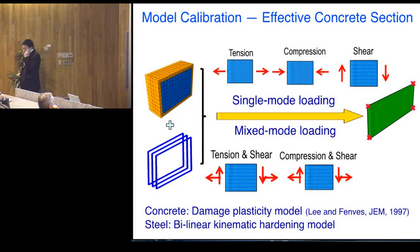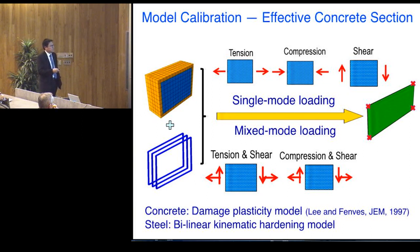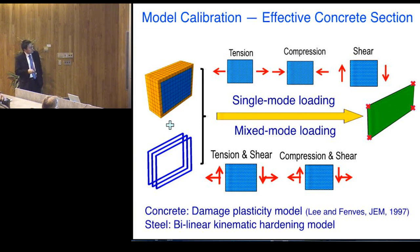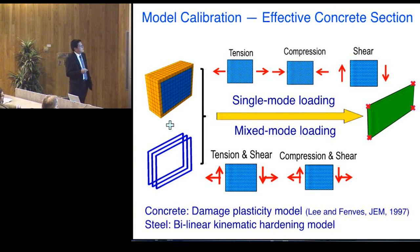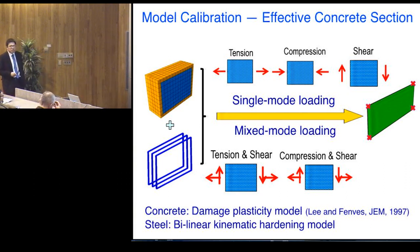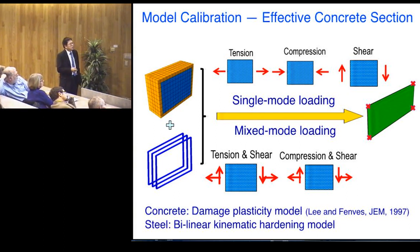For calibration, we must calibrate the cohesive element properties from physical finite element simulation of the damage zone that captures size effects. For the effective concrete section, we subject it numerically to tension, compression, and shear to determine cohesive behavior in those modes, then to combined tension-plus-shear and compression-plus-shear for mixed-mode parameters, and lump these into a single cohesive element. The FE simulation uses the damage-plasticity model developed by Fenves (formerly at Berkeley, now at UT Austin) and a bilinear kinematic hardening model for reinforcement. The mesh size is fixed at 50mm — about two to three times the aggregate size — consistent with using the smeared crack model.